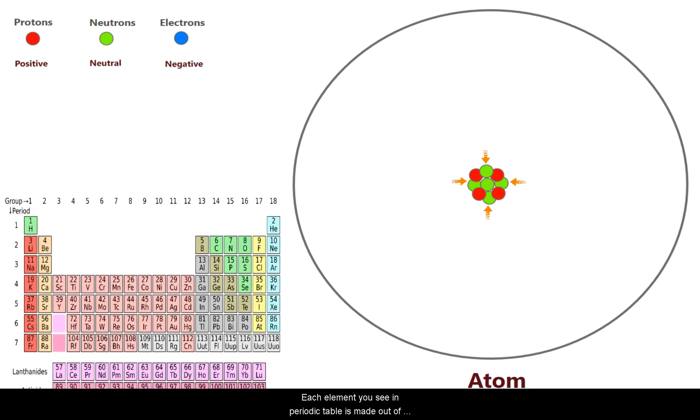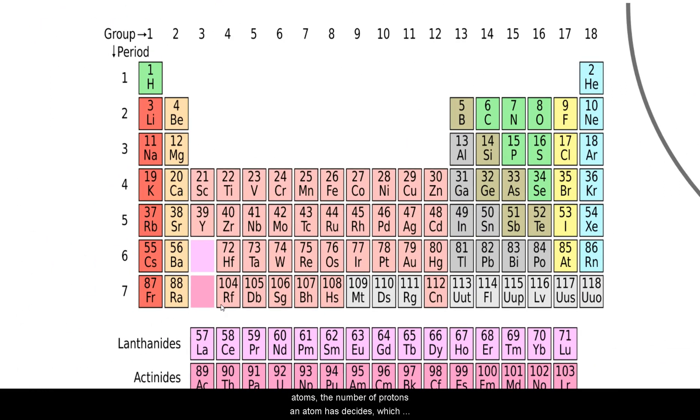Each element you see in periodic table is made out of atoms. The number of protons an atom has decides which element it is in periodic table. For example, a carbon atom has six protons and a hydrogen atom has one proton and an oxygen atom has eight protons. Like this each and every element in periodic table has their own number of protons in nucleus.